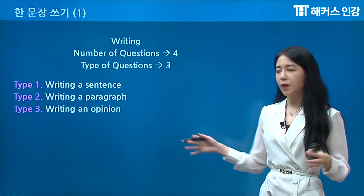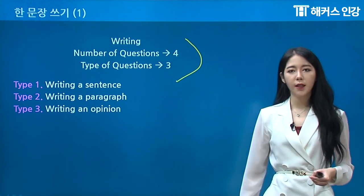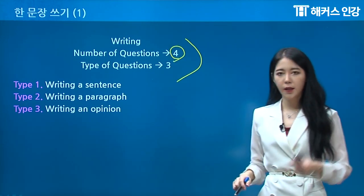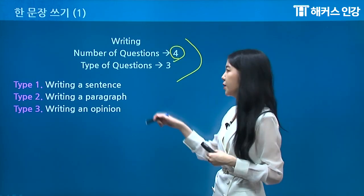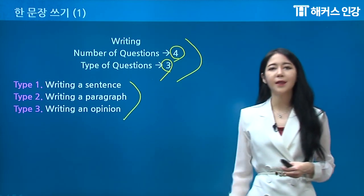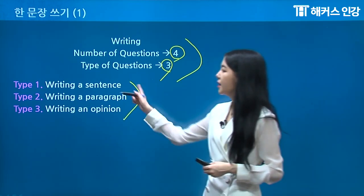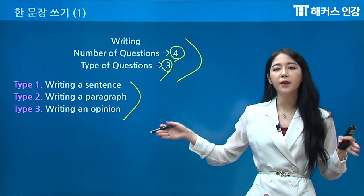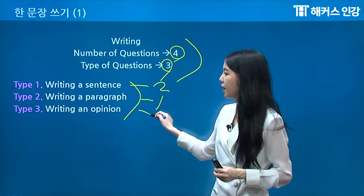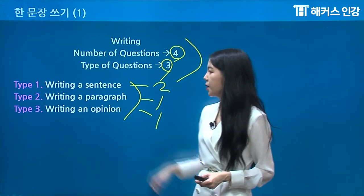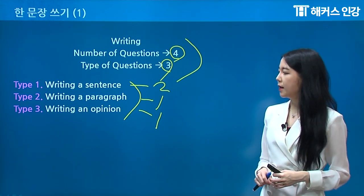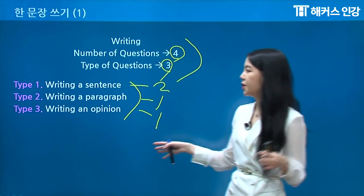Since this is a writing class, I'm going to go over the question types and number of questions. Like I said, we only have four questions — two questions are going to be the same type, so we're going to have a total of three different question types. We're going to go over this across 10 different lessons. Type 1 is going to be writing a sentence or completing a sentence — very short — and you have two questions for this type. Type 2 is going to be writing a sentence, a little bit shorter than the last one. Type 3 is going to be writing an opinion, which is basically longer than type 2.